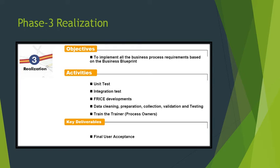The third step is realization. With the completion of the business blueprint in phase 2, functional experts are now ready to begin configuring SAP. The realization phase is broken into two parts: your SAP consulting team helps configure your baseline system (called baseline configuration), and your implementation project team fine-tunes that system to meet all your business and process requirements. The initial configuration completed during baseline is based on the blueprint documentation, and approximately 20% of configuration not tackled in baseline is completed during fine-tuning. Fine-tuning usually deals with exceptions not covered in baseline configuration.